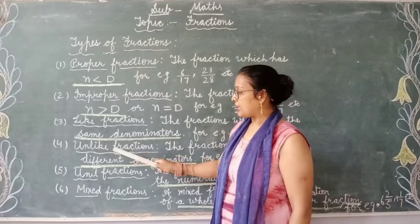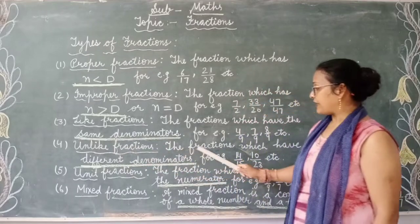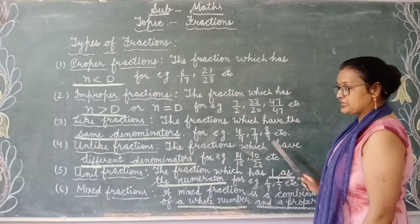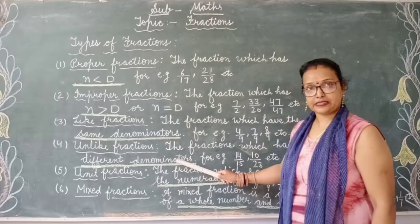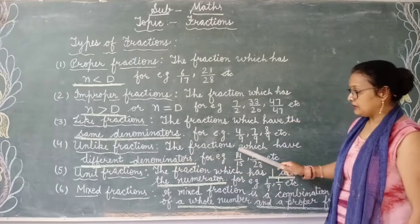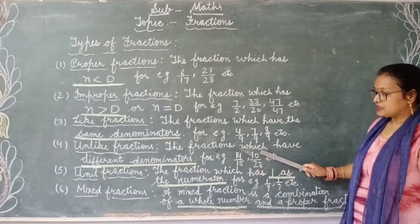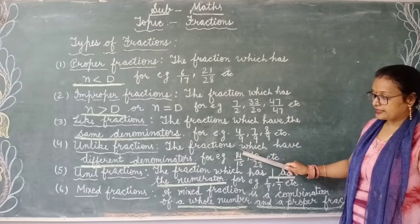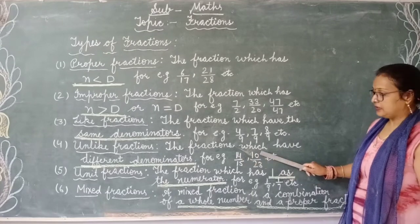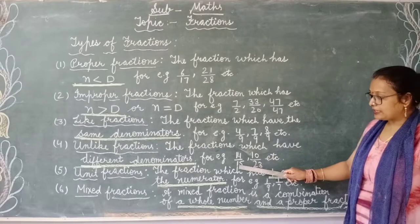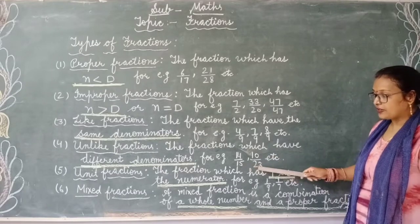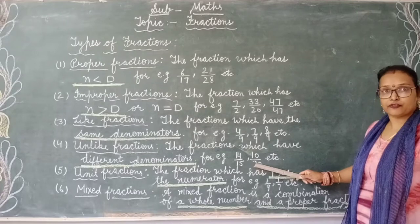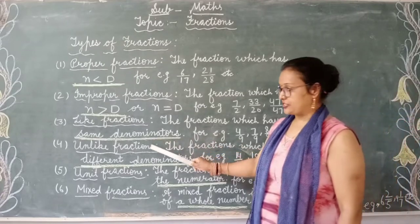Fourth is unlike fractions. The fractions which have different denominators. For example, 14 by 15, 10 by 23. Here the denominators are 15 and 23, both are different. This is called unlike fractions.